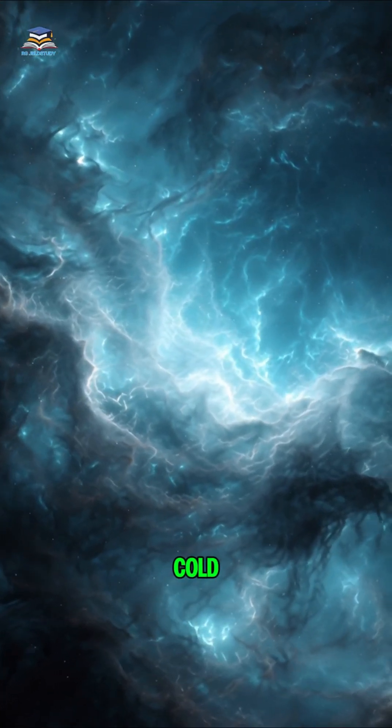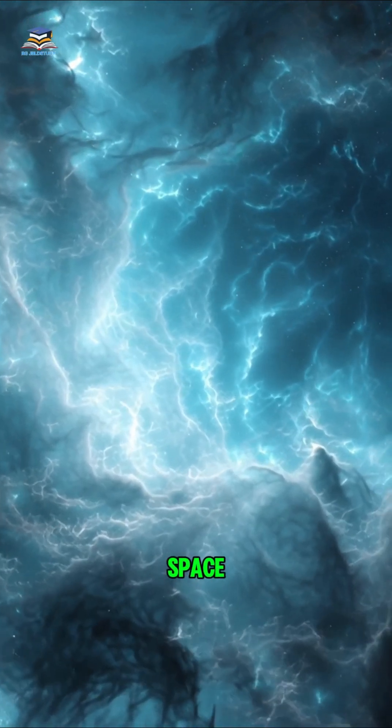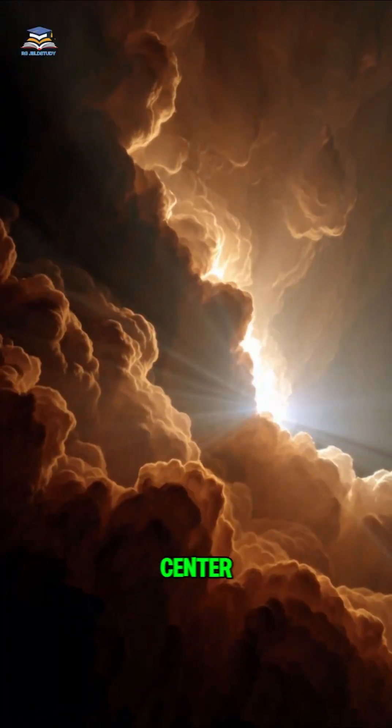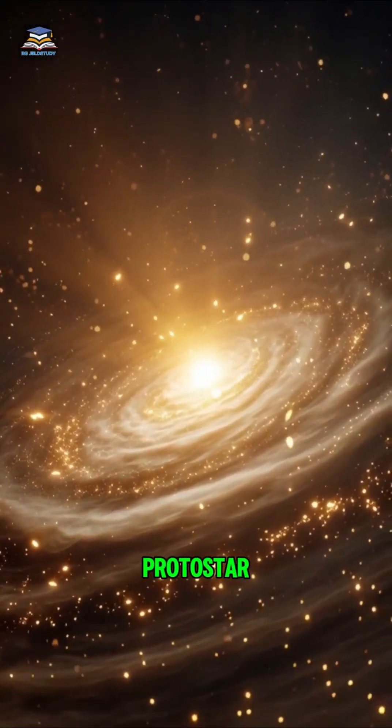The story begins inside a cold, dark nebula, a giant cloud of dust and gas floating in space. Slowly, gravity pulls this cloud together, and the center starts getting hotter and hotter, until a glowing ball called a protostar is formed.